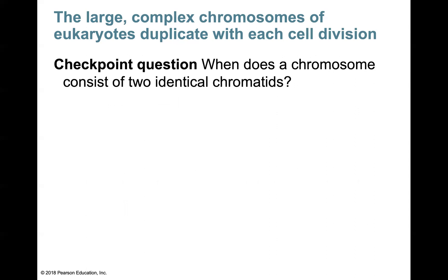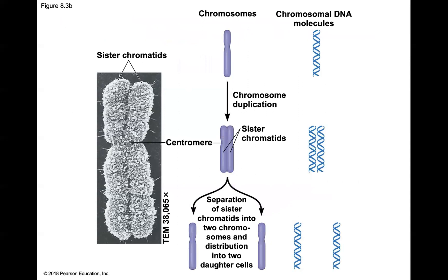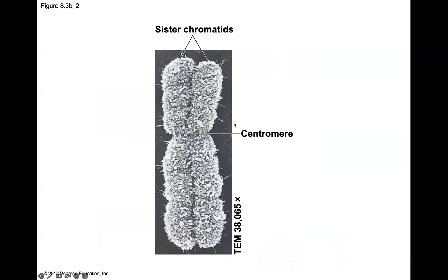Checkpoint question: When does a chromosome consist of two identical chromatids? Here is an illustration of the creation of a complete sister chromosome. We see these two sister chromatids in the micrograph — a single chromosome, and when these two sister chromatids come together, they are held together at the centromere. Separation of these two sister chromatids into chromosomes and distribution into two daughter cells occurs during cell division.